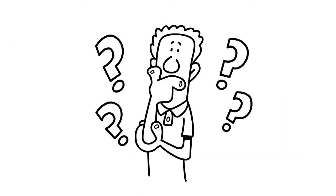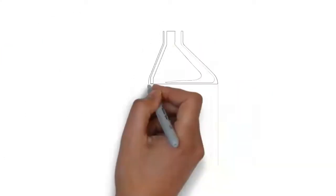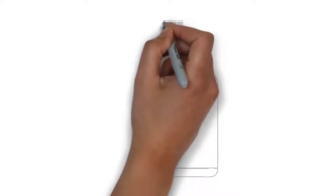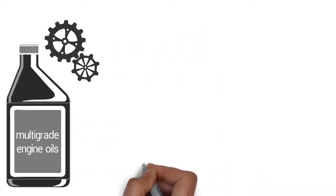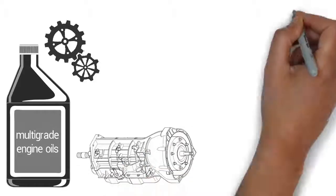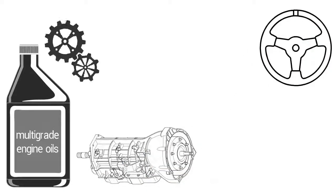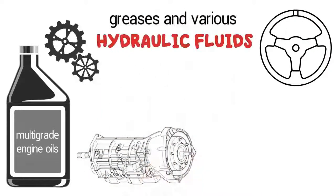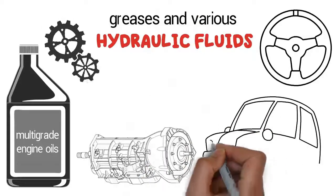Where are these modifiers used? Viscosity improvers are primarily used in multi-grade engine oils, gear oils, automatic transmission fluids, power steering fluids, greases, and various hydraulic fluids.